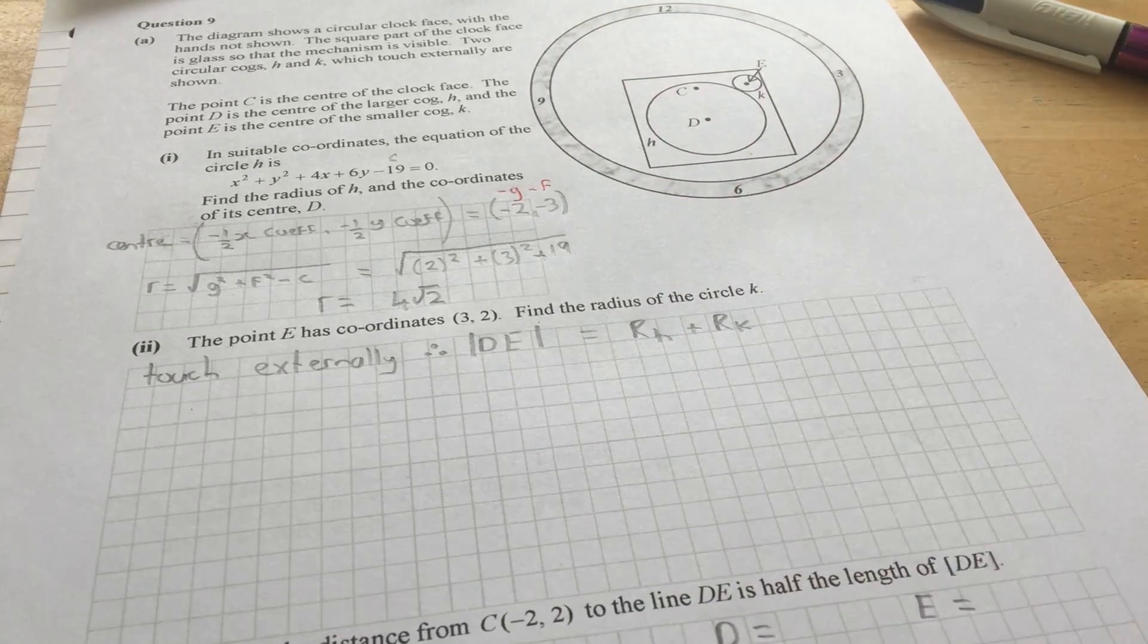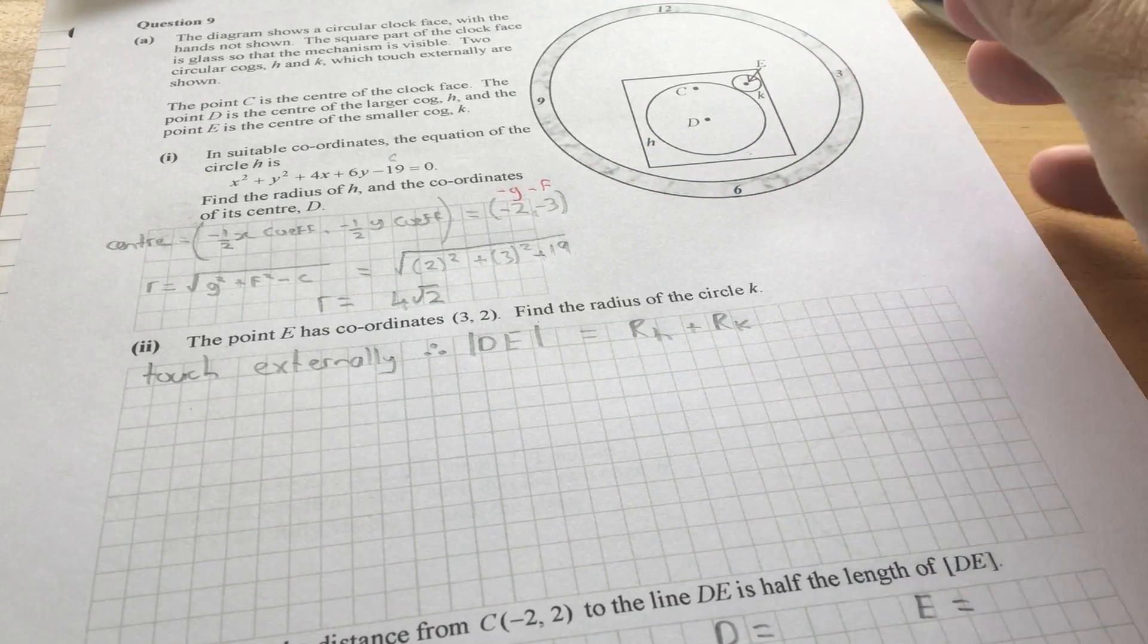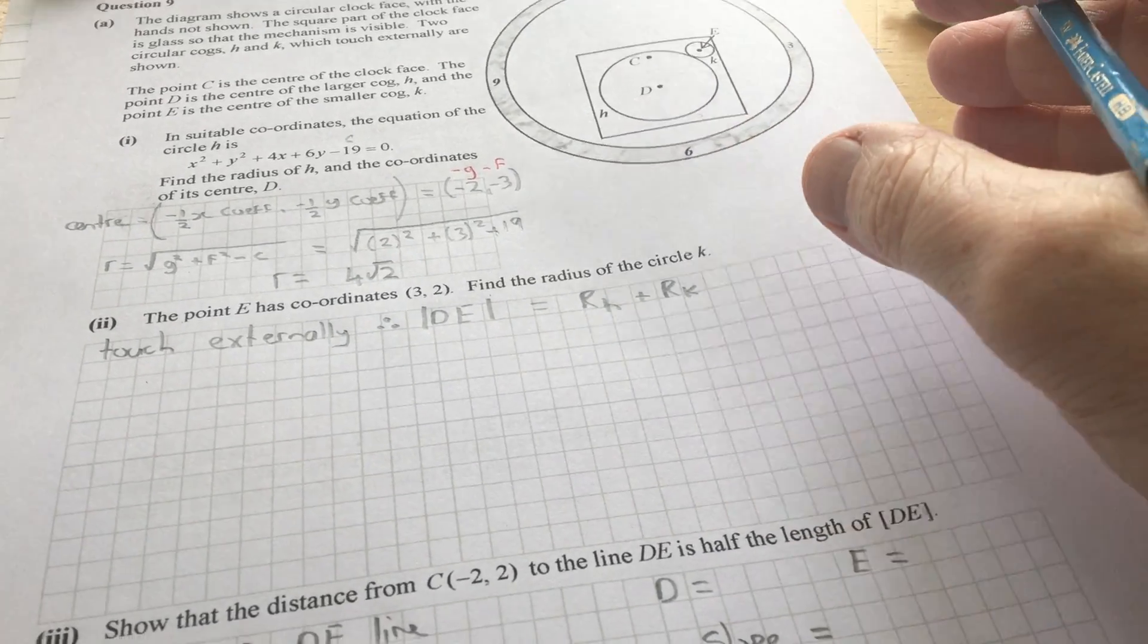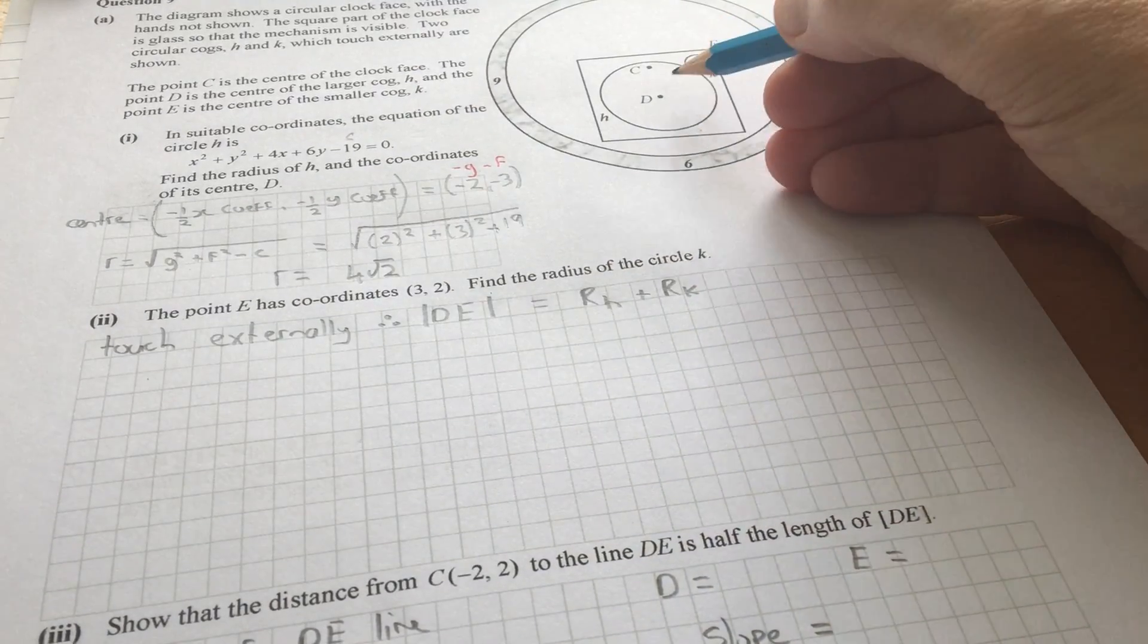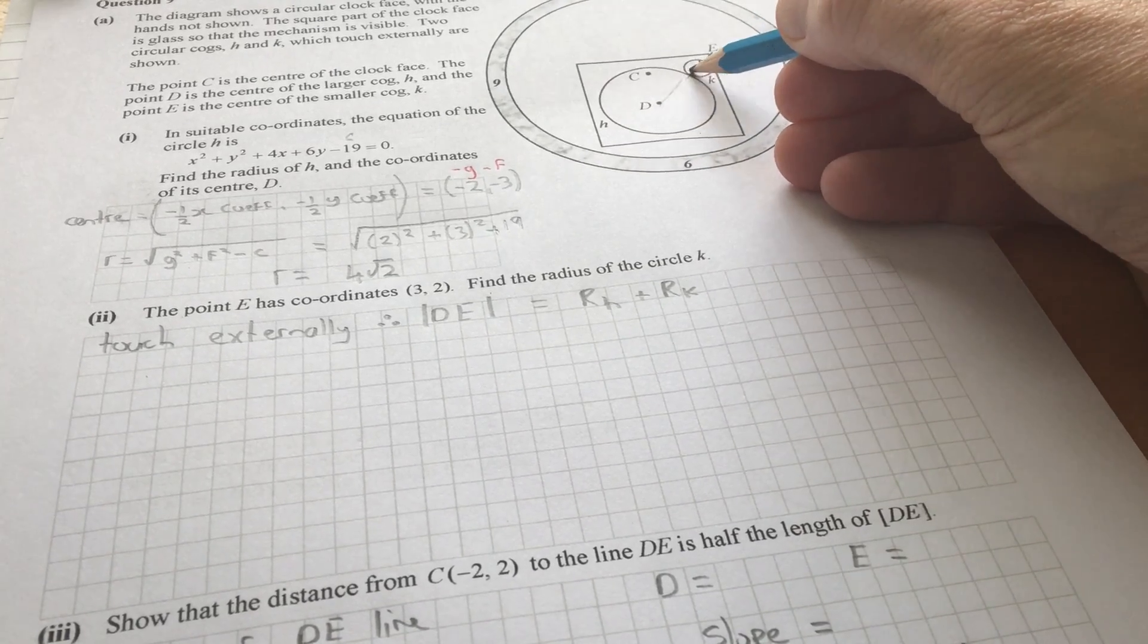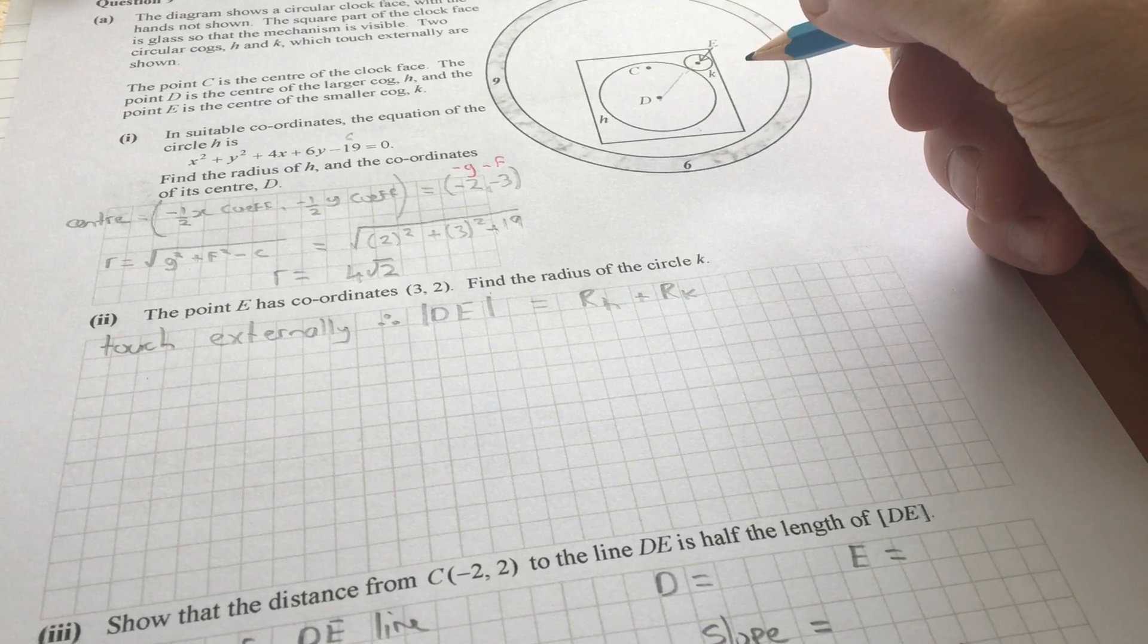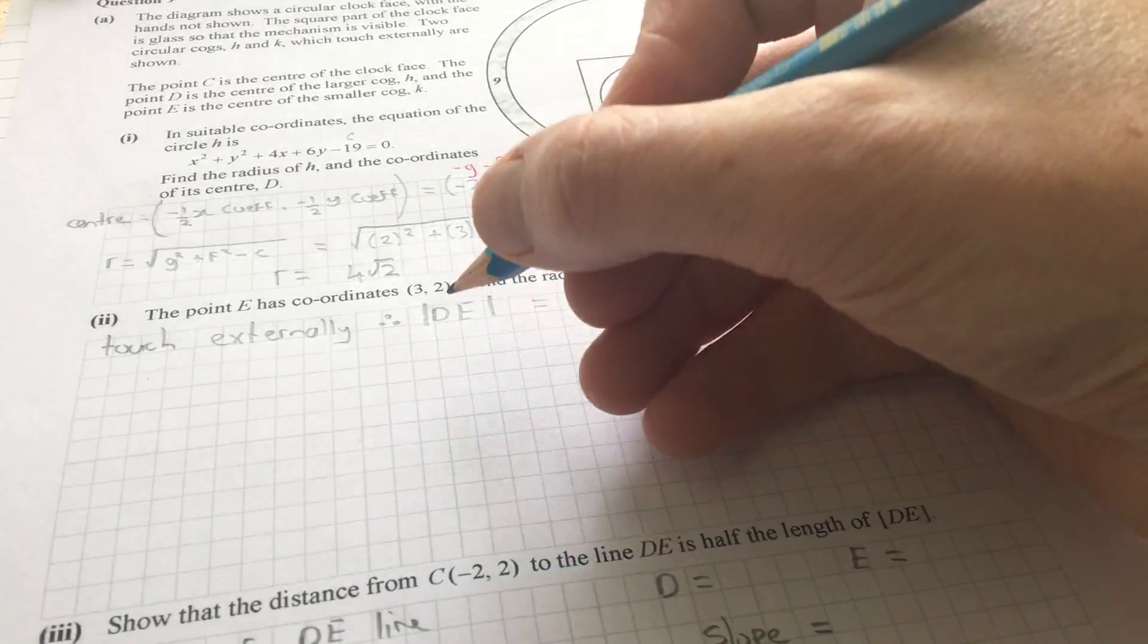Now, the point E has coordinates 3, 2. Find the radius of the circle k. Now, because the circles touch externally, we're given that in the question. So therefore, the distance between D and E is equal to this radius plus that radius. Now, the distance between D and E is 5 root 2.